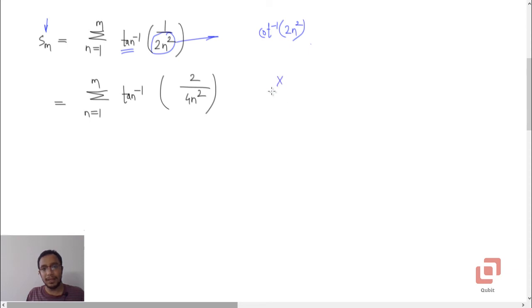Step number one, multiply and divide by two. So this will leave this one as two and 2n squared will become 4n squared. And now what you do is you write 4n squared minus 1, which can be factorized as 2n plus 1 times 2n minus 1.